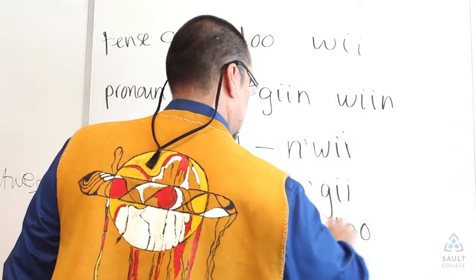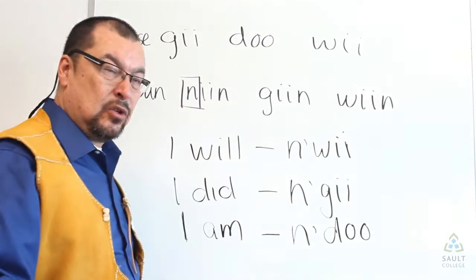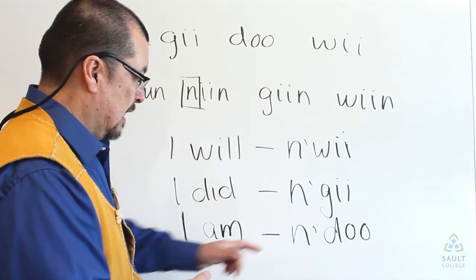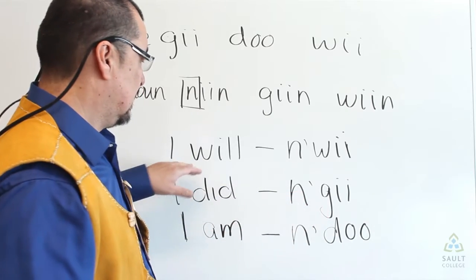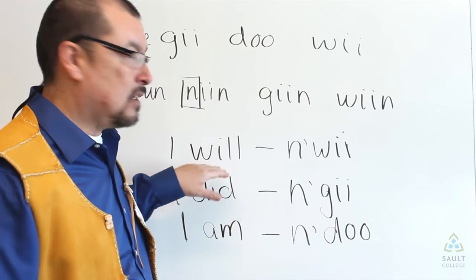Ndo. Ndo. I am. I did. Ngi. Something that's happened in the past. Something I am going to do in the future. Nwi.